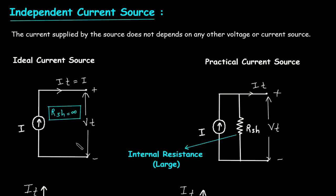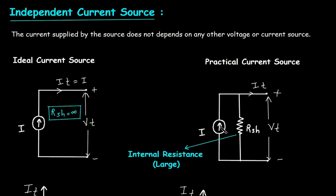In case of ideal current source, there is no parallel internal resistance present. In case of practical current source, there is a parallel internal resistance RSH with a large value. The RSH value is very large — for the ideal case, we can say RSH value is infinite because it is open, so its parallel resistance value is infinite. Here, IT is equal to I. But for the practical case, IT is different from the source current.